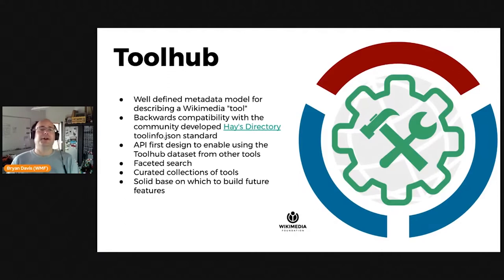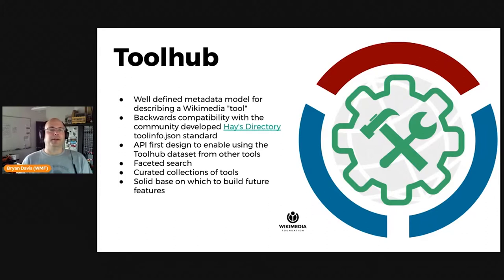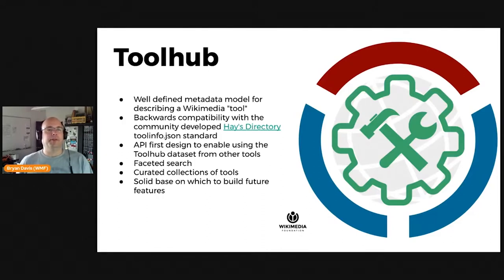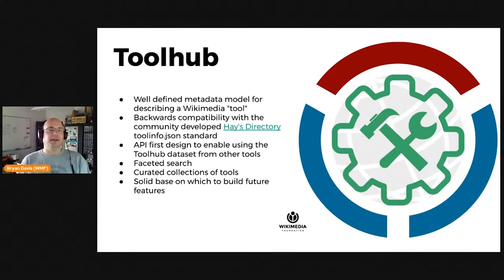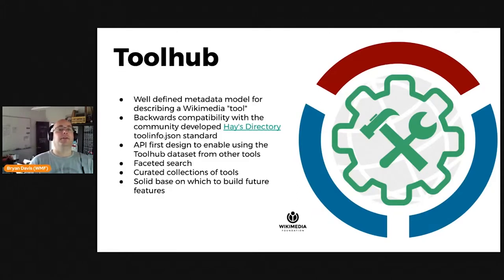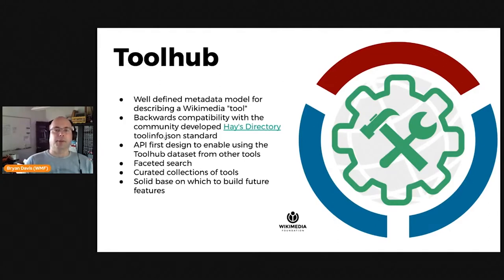Our initial release of Toolhub is focused on the set of goals on this slide. We're working towards a core product that makes collecting and reusing information about tools as open as we can. Rather than yet another one-time list of tools, we want a platform that makes it possible to extend and remix the catalog. Critical to this openness is our API-first design. A web API is a fancy way of saying that a web application has features that can be used by other software, rather than just by humans. Wikimedia volunteers should be able to build tools that interact with the data stored in Toolhub in many ways.